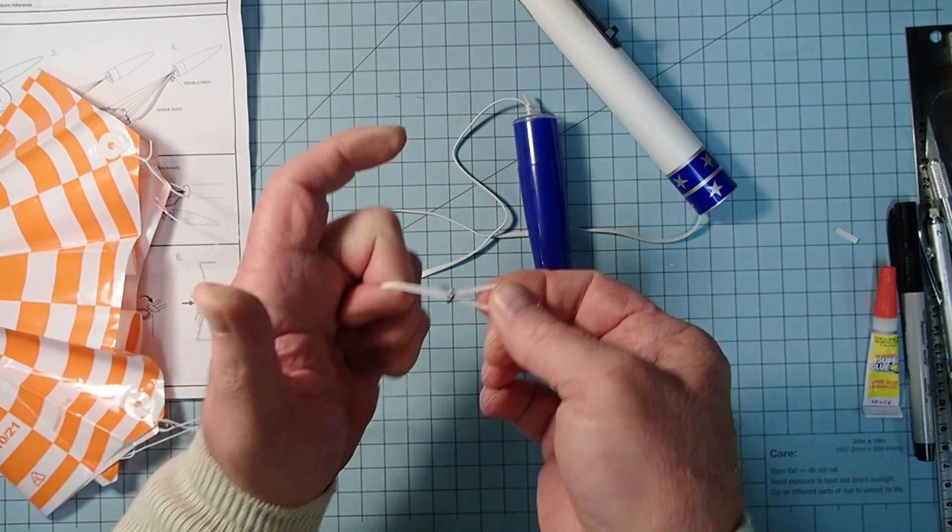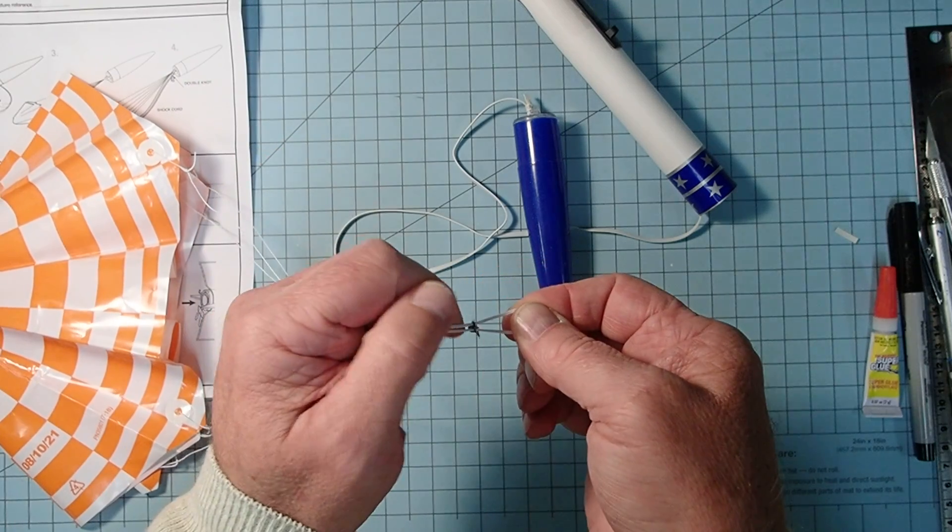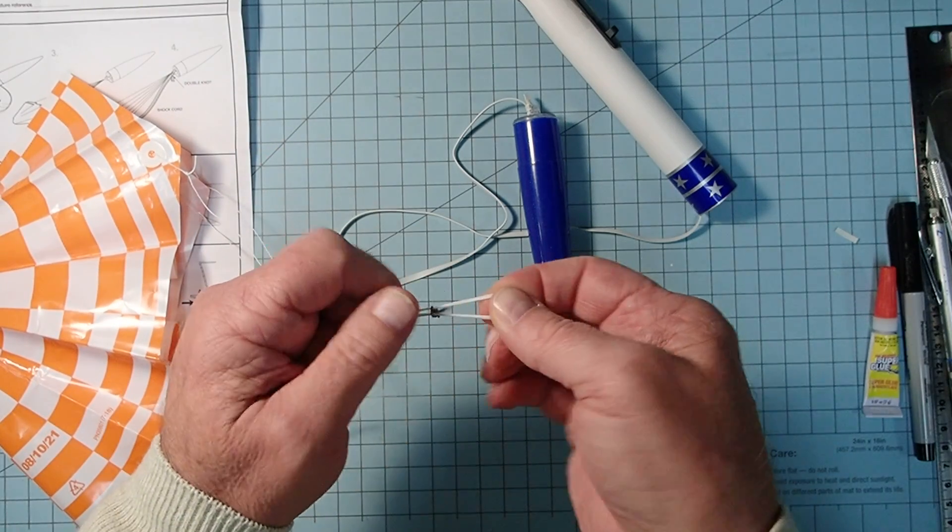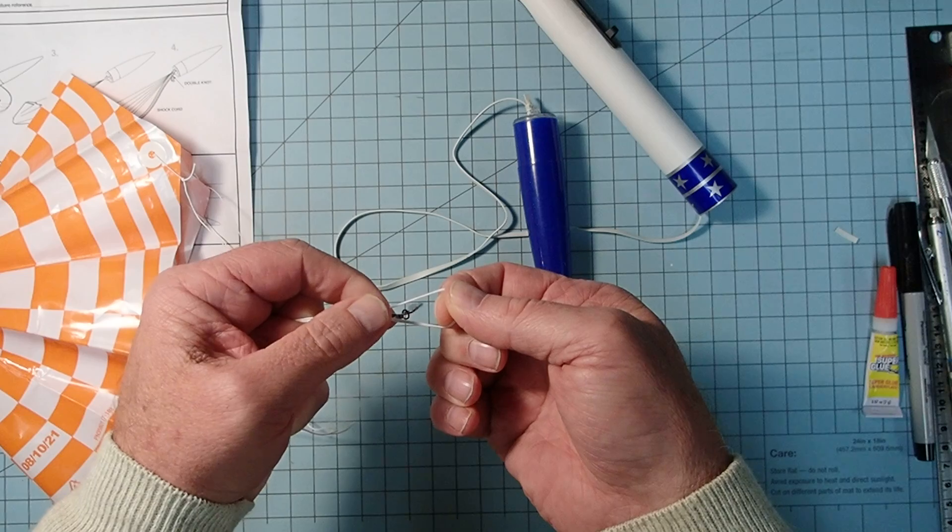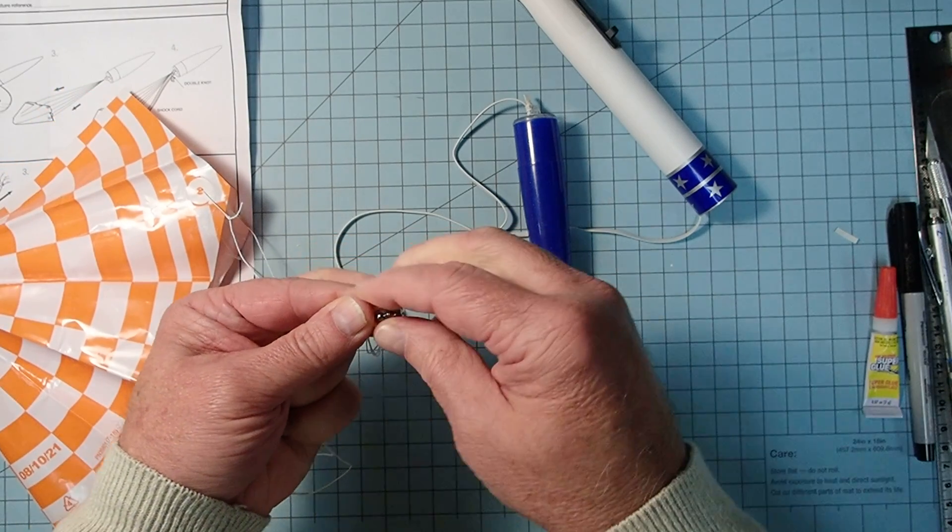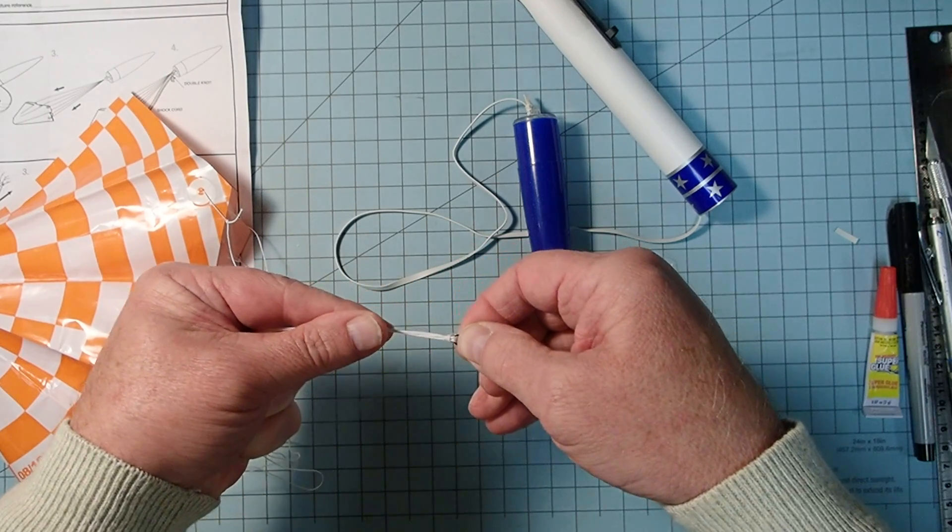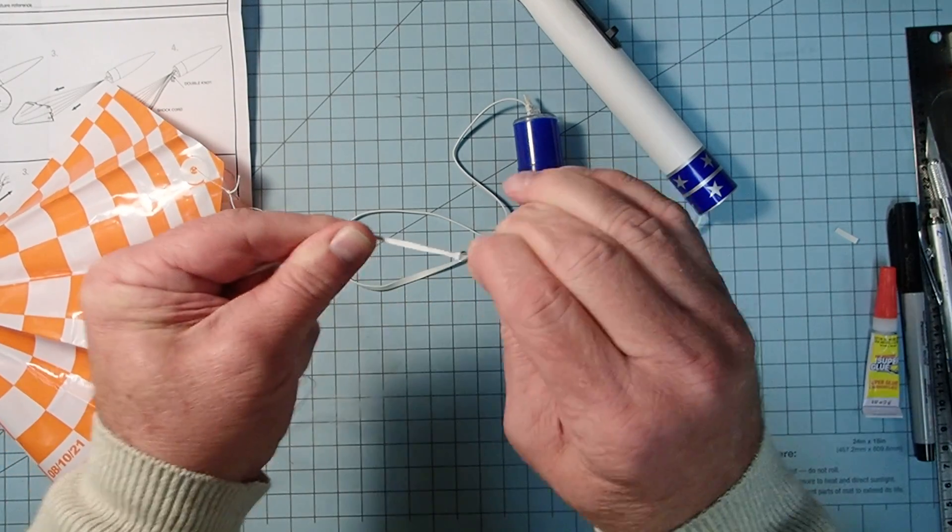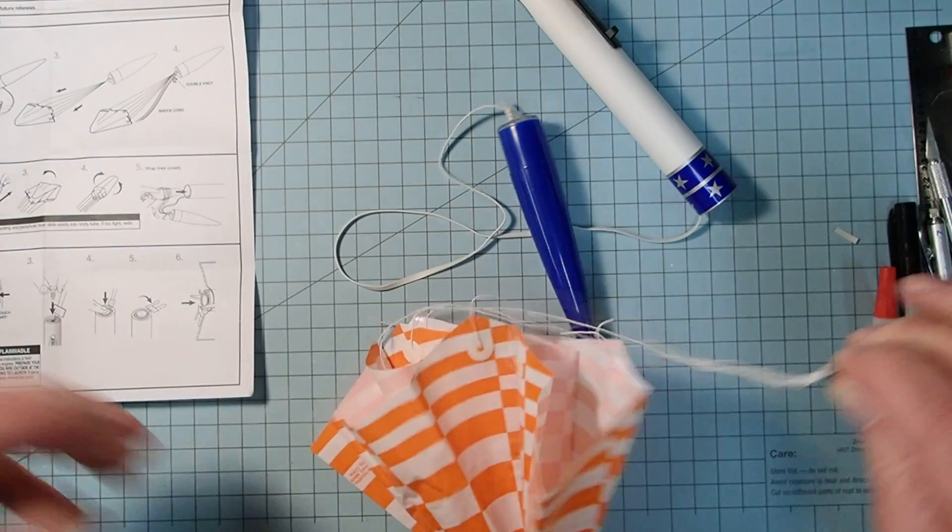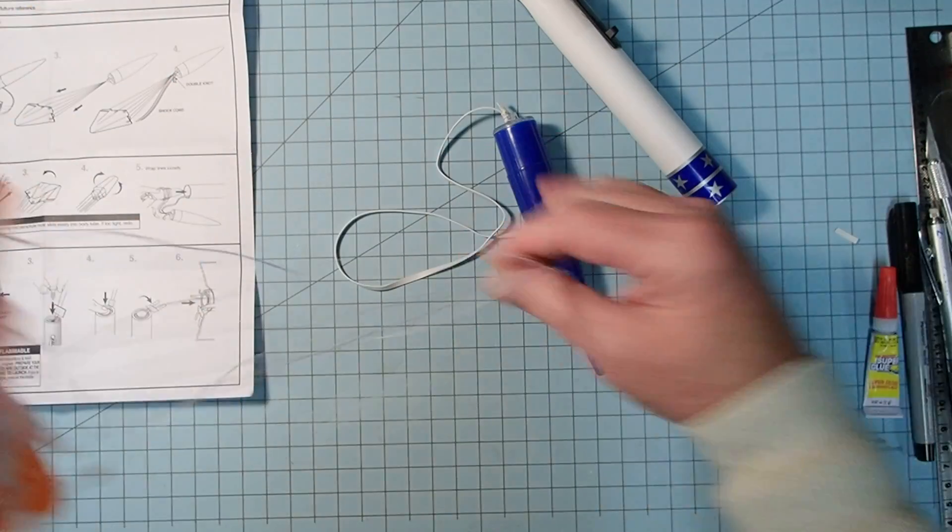OK. Now, as I'm doing this, you can see that I'm always holding on to the shroud so they're not changing length on me. All right. Move that so you've got enough loop here and then you're going to move the entire snap swivel through the loop. All right. And then pull that tight and it's going to form a nice little knot right there.